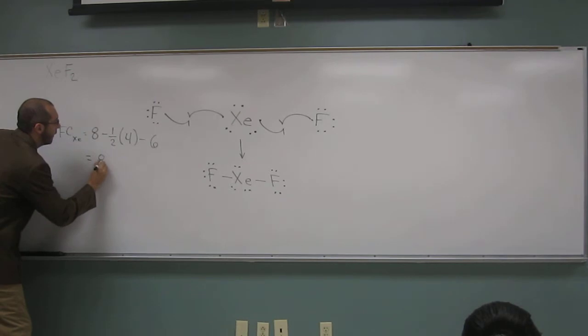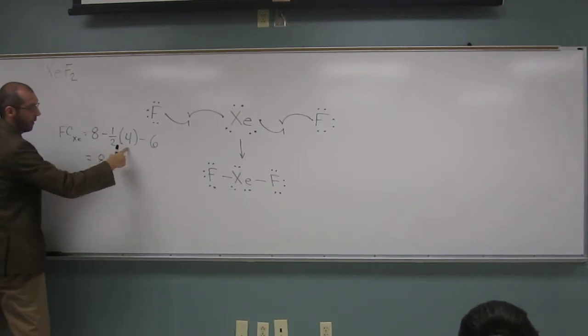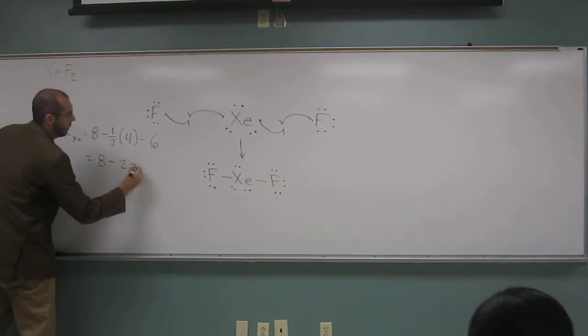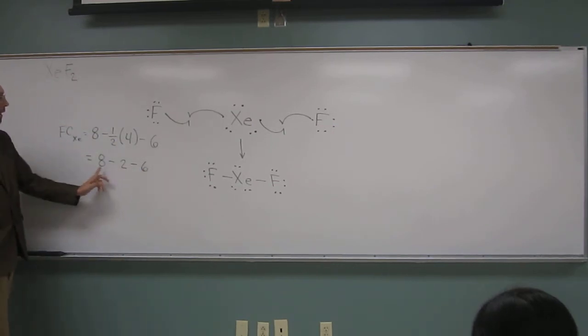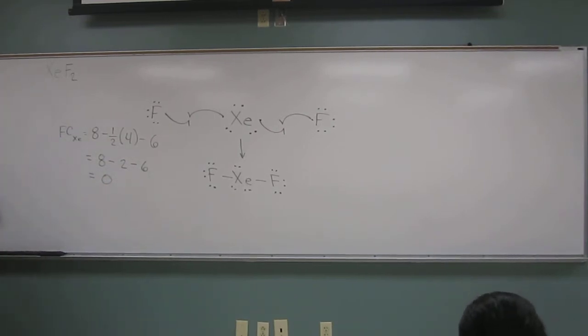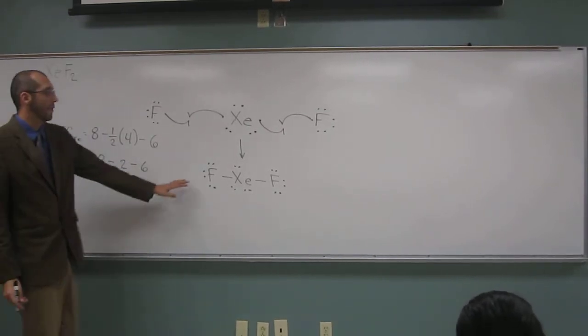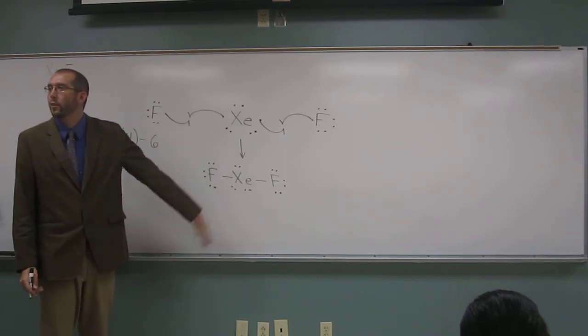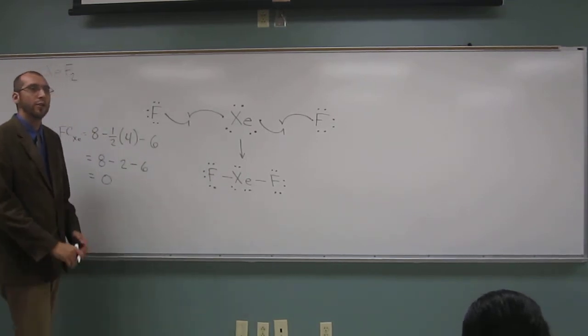So we do that, so what do we get: eight minus four divided by two is two, minus six, right? So eight minus two minus six is eight minus eight, or zero. So the formal charge of xenon is zero, and hopefully you guys could just tell that fluorine, when it has only one bond, its formal charge is zero.